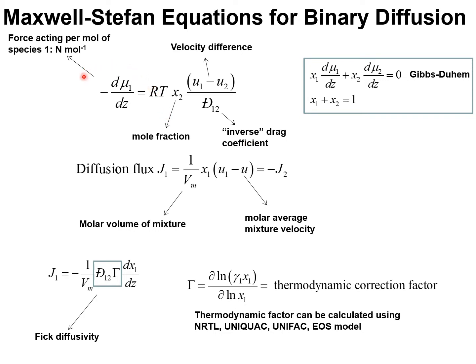The force acting per mole of species 1 is a negative of the gradient of the chemical potential with the units newtons per mole. The Maxwell-Stefan equation can be reformulated in terms of the diffusion flux, which is defined as the flux with respect to the molar average reference velocity.